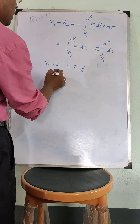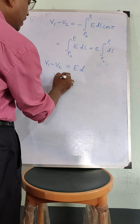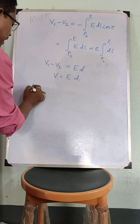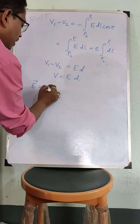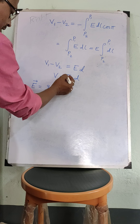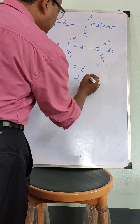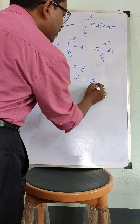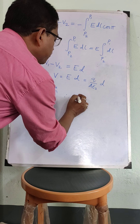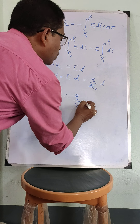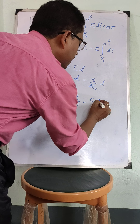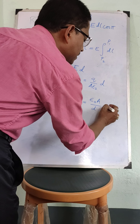If we call V1 minus V2 as V, the potential difference between the two conductors equals Ed. We already calculated E as Q divided by Aε₀. So V equals Qd divided by Aε₀. Therefore, the capacitance Q by V equals ε₀A divided by d.